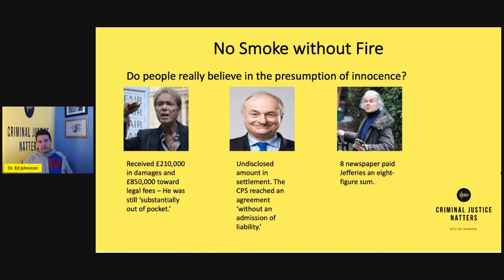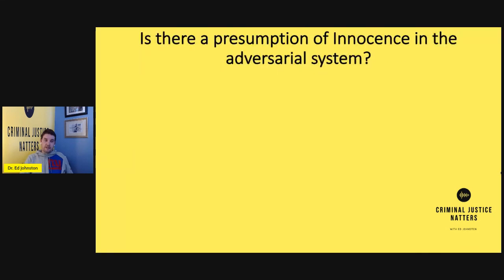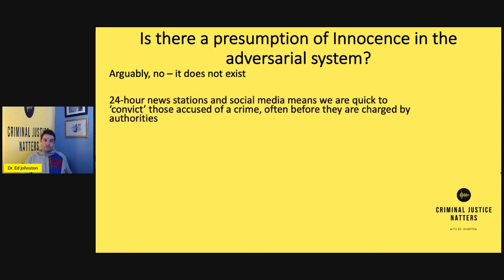What all of these people have in common is the idea that the presumption of innocence didn't exist for them. People believed they were guilty and thought they must be caught up in this — and that's massively problematic because these are high-profile cases. This concern must exist with other cases in our justice system too. So is there a presumption of innocence in the adversarial system? Arguably no, it does not exist. 24-hour news stations and social media mean we're often quick to convict those accused of crime, often before they are even charged by authorities.